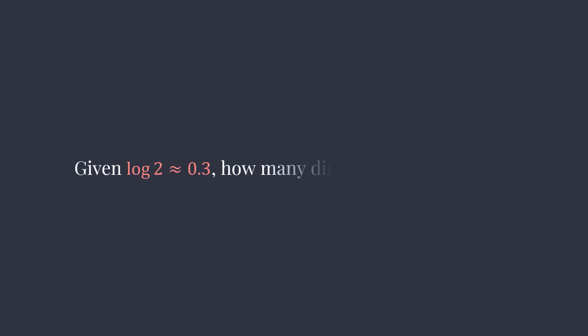Given that log of 2 is approximately 0.3, how many digits does the number 2 to the 89 power minus 1 have?